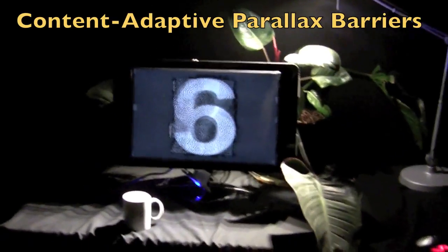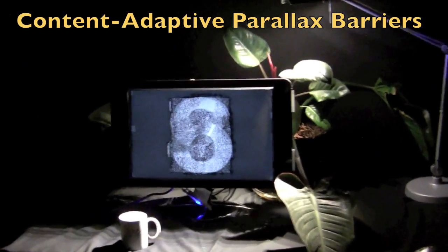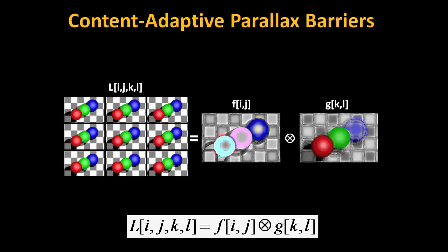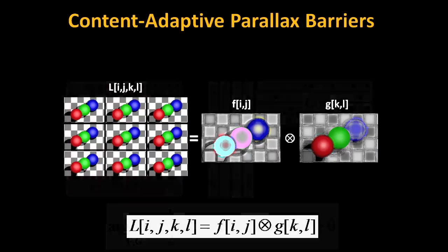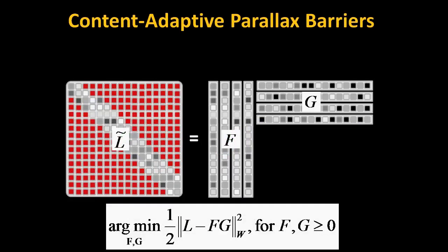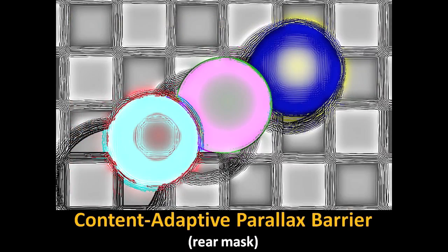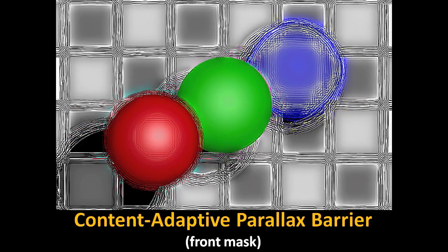Parallax barriers have persisted nearly unchanged since their introduction over a century ago. Using a light field analysis, we recognize the inherent rank constraints for barrier displays. Our proposed content-adaptive barriers, while sharing these constraints, allow a novel trade-off between brightness, frame rate, and reconstruction accuracy, illustrating the potential of compressive displays.